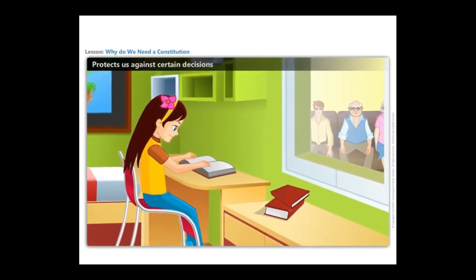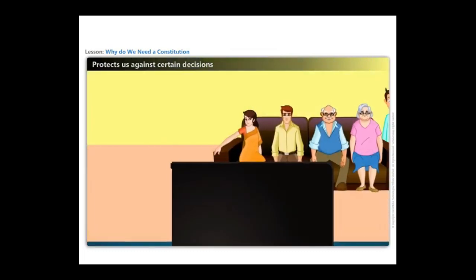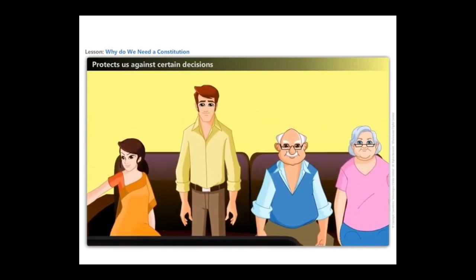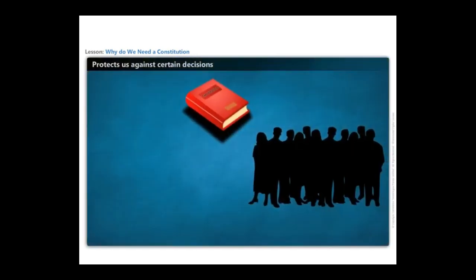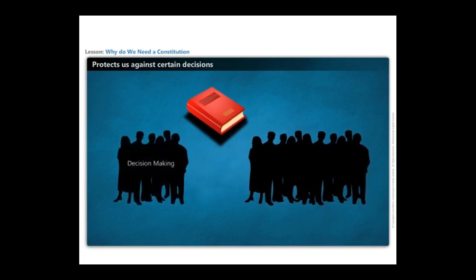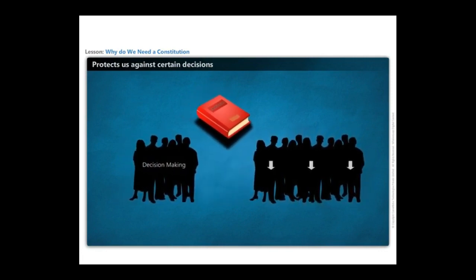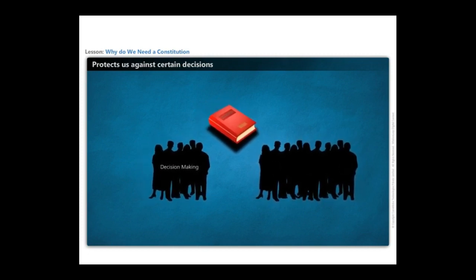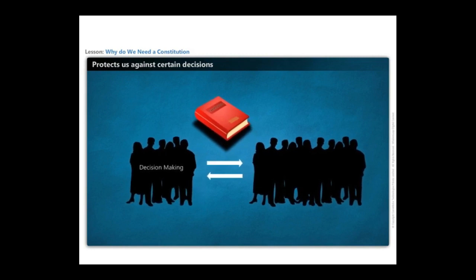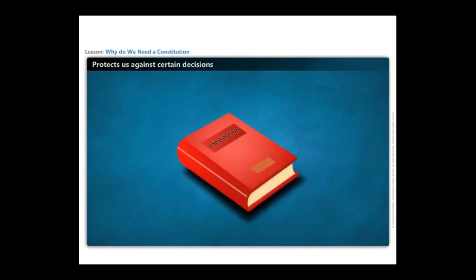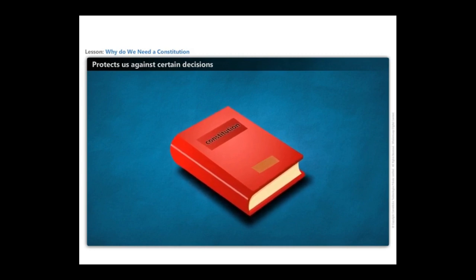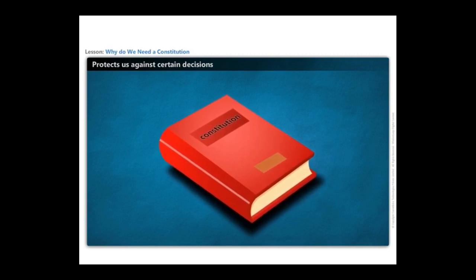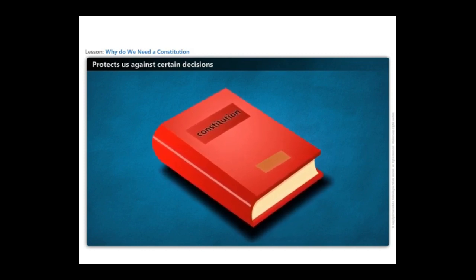This is very usual in every family — parents take decisions for the well-being of their children in a wider context. Similarly, at a large scale, the constitution protects us against certain decisions which a few people can take, but which could have an adverse effect on the larger principles that the country believes in. Thus, we need a constitution to save us from ourselves. A good constitution does not allow the whims of a few people to change its basic structure, and does not allow for the easy overthrow of provisions that guarantee the rights of citizens and protect their freedom.